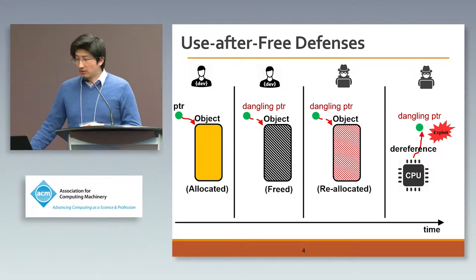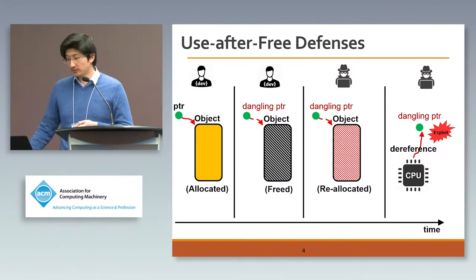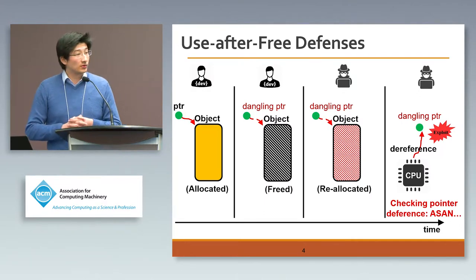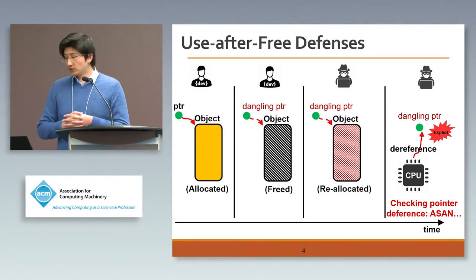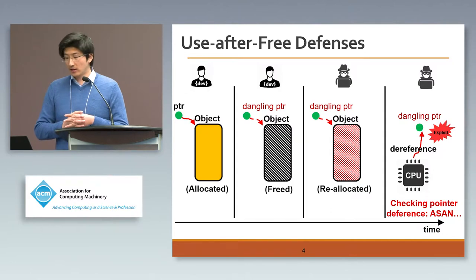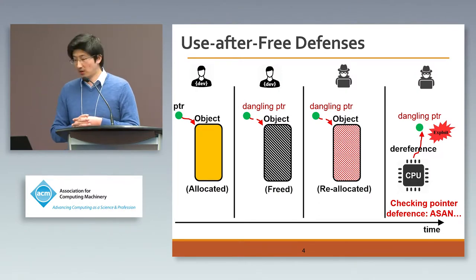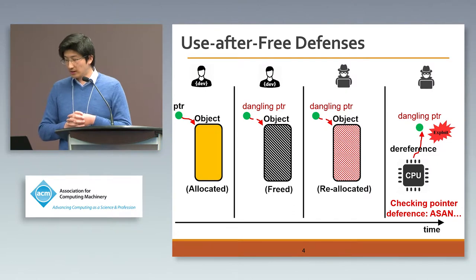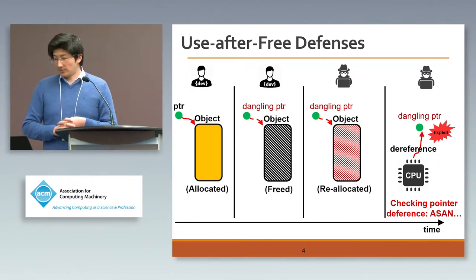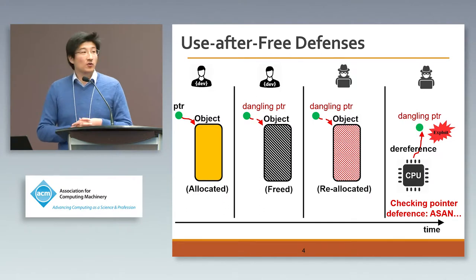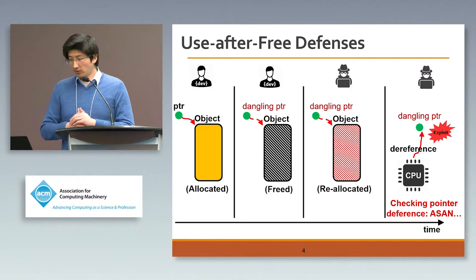On the other hand, there are several lines of research work on the defense side. One of the most famous is AddressSanitizer. A key point of AddressSanitizer and related research work is doing checks just before every pointer dereference. By doing so, you can check whether you are dereferencing something that this pointer does not belong to, which can prevent use-after-free very effectively. However, since pointer dereference is such an intensive operation, it creates a lot of overhead at runtime — AddressSanitizer can cause over 3x overhead.